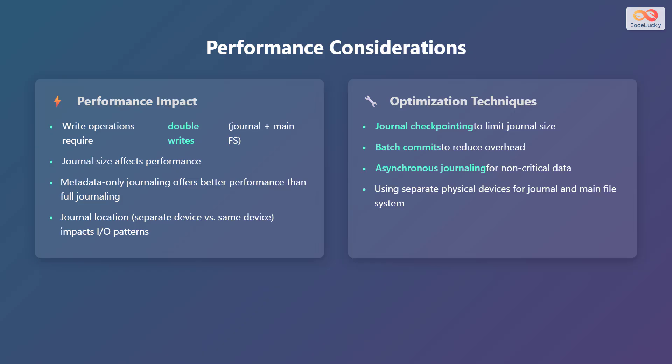To optimize performance, there are several techniques you can use. These include journal checkpointing, batch commits, asynchronous journaling, and using separate physical devices for the journal and the main file system.